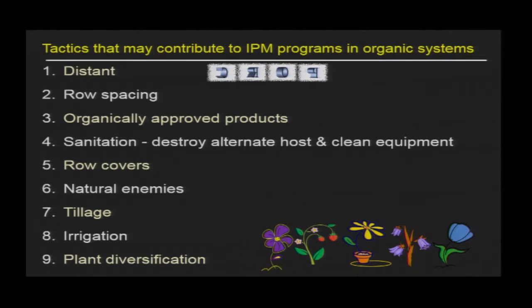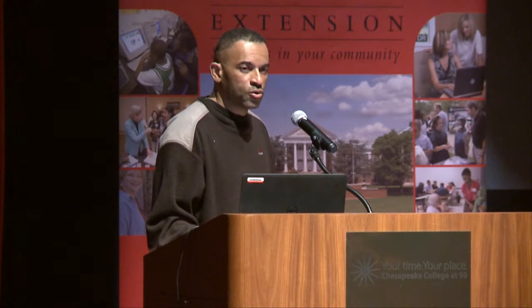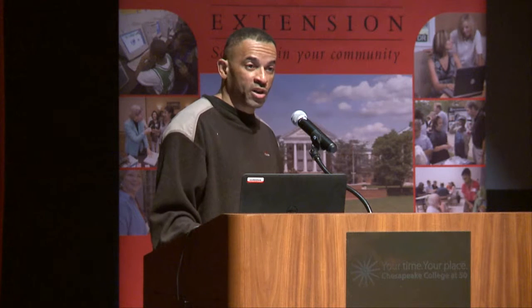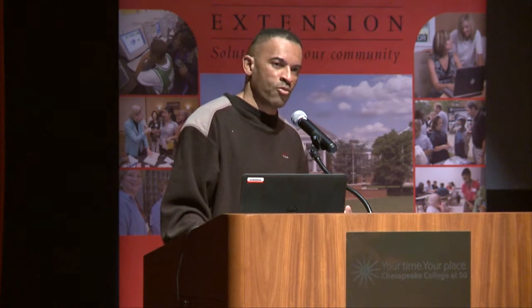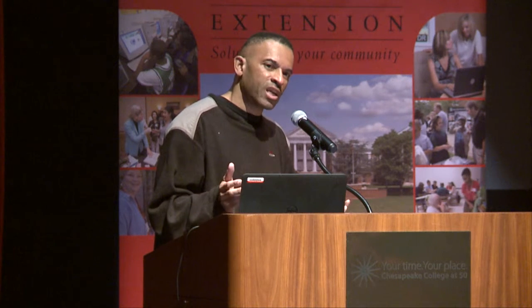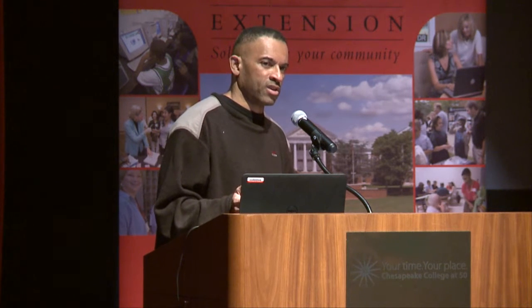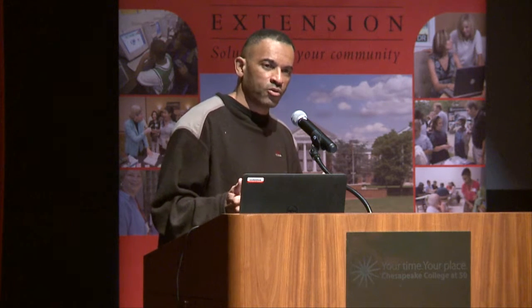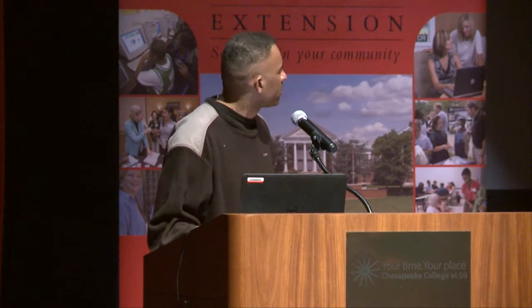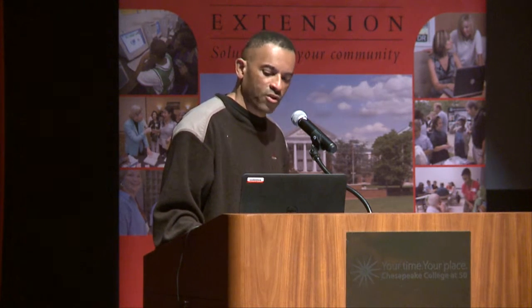Row covers can prevent insects from colonizing. Then there's natural enemies, whether it's predators or parasitoids — wasps that lay their eggs inside other insects. Tillage can be used as a tool for weed management but can also impact insects. And of course there's irrigation. Proper irrigation can make that plant grow more vigorous so it can out-compete pest pressure. Irrigation can also change the microclimatic conditions within a cropping system — if you have high humidity, you may make some insects vulnerable to pathogens. And then, of course, one of my favorites is plant diversification.